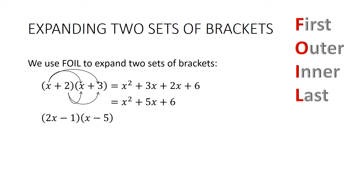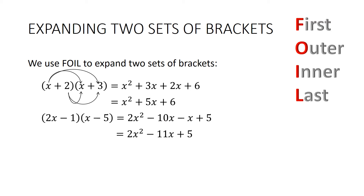Let's do another one: (2x − 1)(x − 5). First is 2x², outer is 2x times −5 which is −10x, inner is −1x or −x, and last is positive 5. Collecting the two middle terms: be careful — this doesn't make a positive. It's minus 10x minus another x, so it's −11x. Answer: 2x² − 11x + 5.